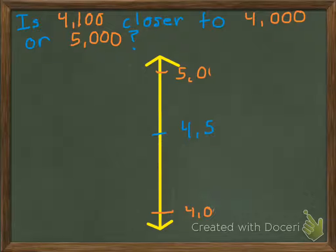Let's get rid of this now, make it even a little clearer. Here, 45 is halfway between 40 and 50. Therefore, if we take the numbers back the way they were, 4,500 is halfway between 4,000 and 5,000.